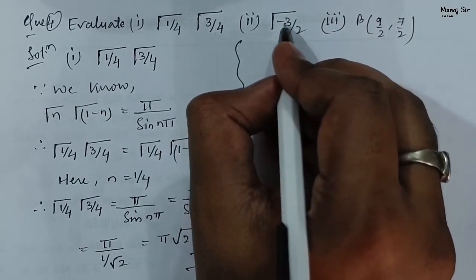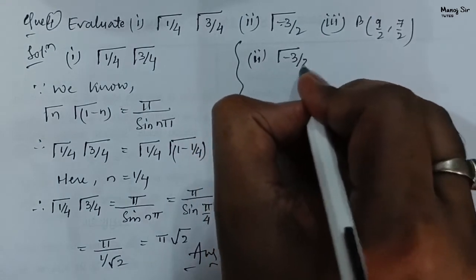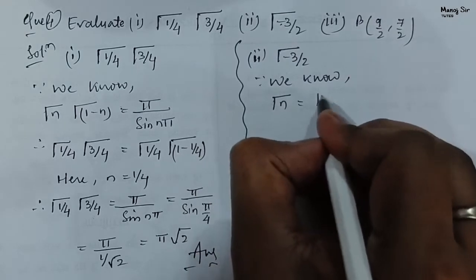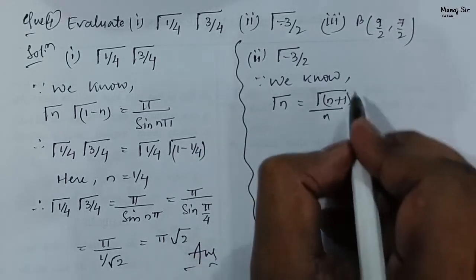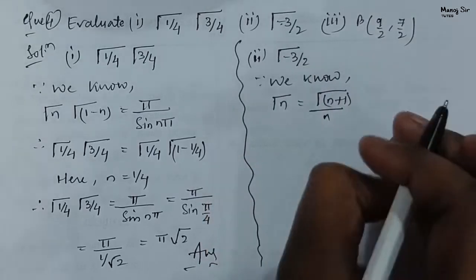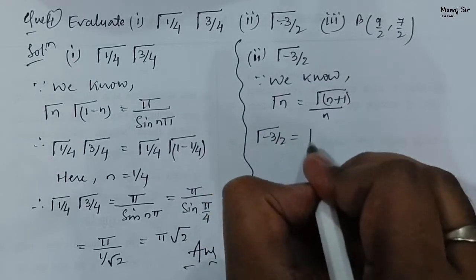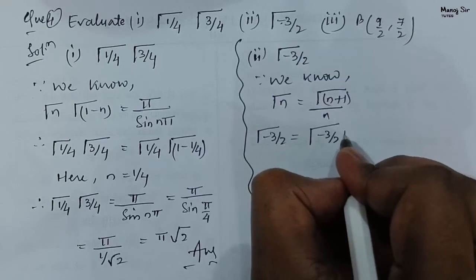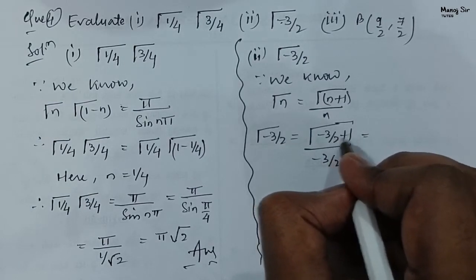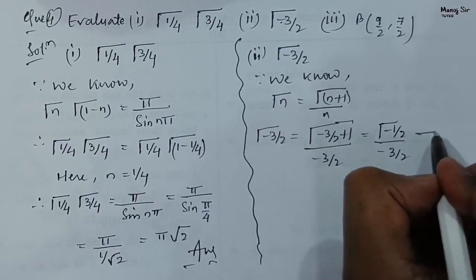Now for the second part: find gamma(−3/2). We use the recurrence formula gamma(n) = gamma(n+1) / n, which is applied when we have a negative argument. Putting n = −3/2, we get gamma(−3/2) = gamma(−3/2 + 1) / (−3/2) = gamma(−1/2) / (−3/2). Call this equation 1. We still need to find gamma(−1/2) since it also has a negative sign.